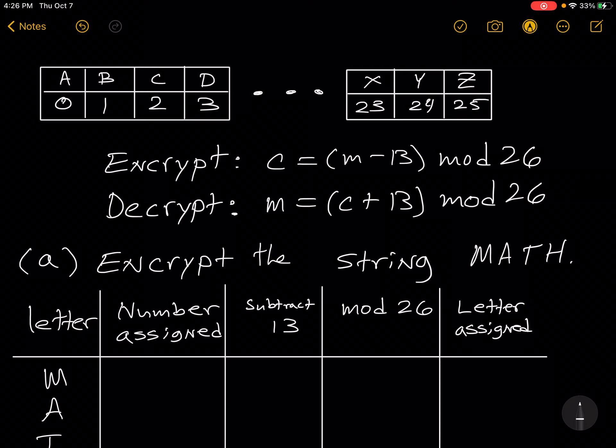So in my first column, the letter column, I have M. This is because M is the first letter in the string MATH. So what I do to find the number assigned, I look in this table, I find M and I notice that right below it is the number 12. So that goes there.